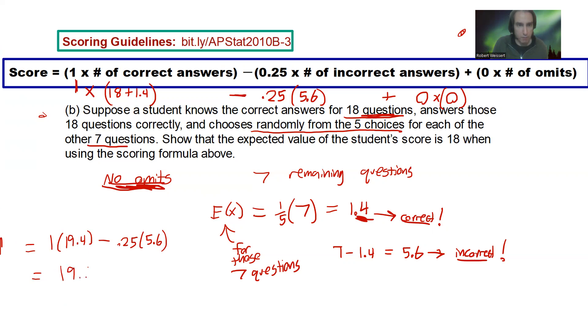Oh, my gosh. Well, this is 19.4. Then that is 1.4, isn't it? A quarter of 5.6. 1.4. So, guess what that combines to? Oh, my gosh. That's 18. So, my expected value, if I get, if I know I'm going to get 18 questions right, and I randomly guess the other seven, it's still going to be 18.